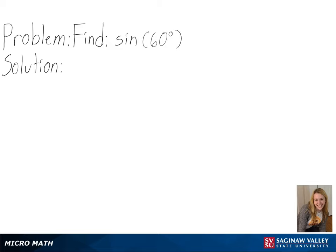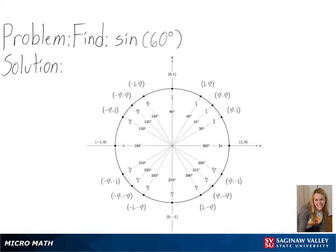Our problem is to find sine of 60 degrees. To solve this, we will be using a unit circle. We will start at (1, 0) and then move counterclockwise until we have rotated 60 degrees.